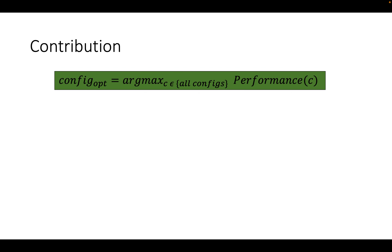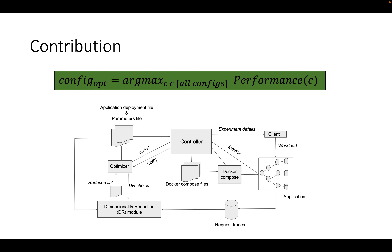To tackle this problem, we formulate finding the optimal configuration as a black box optimization problem, wherein the goal is to find the configuration that optimizes the metric of interest over all available configurations. To do that, we implement an automation framework as shown in this figure. There is a controller that queries the optimizer, where the different optimization algorithms are running, for a configuration. The controller takes this configuration and creates the docker-compose files needed to bring up the application.